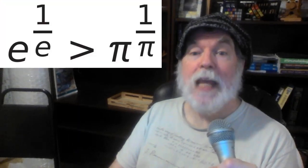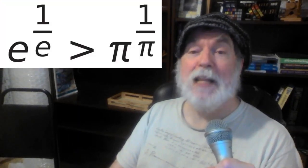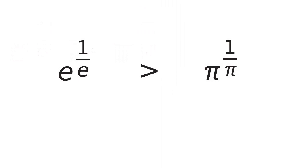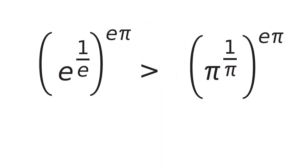The e-th root of e is larger than the pi-th root of pi, so we can raise these to the power of e times pi, and they will compare the same way.